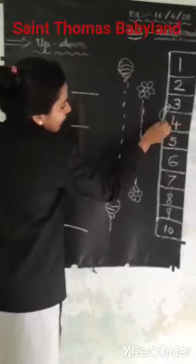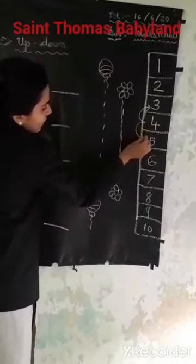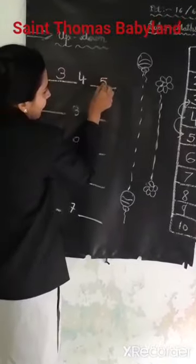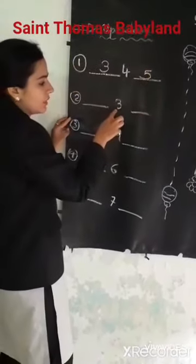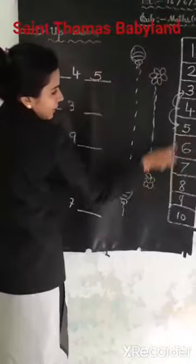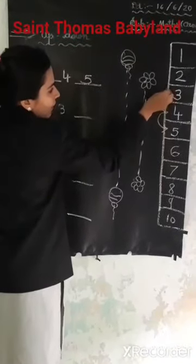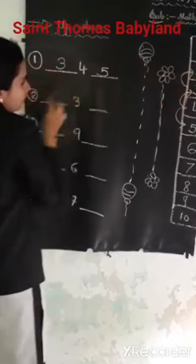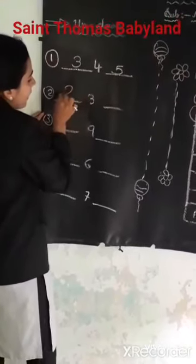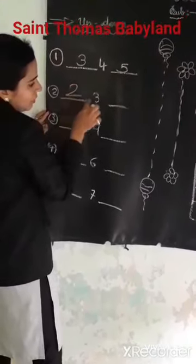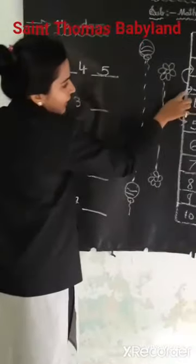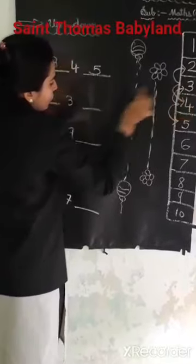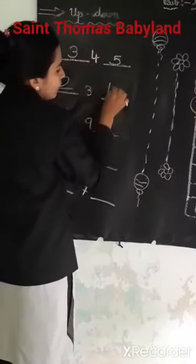4 — after 4, that means 4 down, what will come? 5. What is this? 3. Where is 3? Here. 3 up, what will come? 2. Here I write 2. 3 down, what will come? 4. So here I write 4.